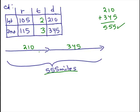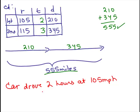So for the first part of the trip, you can see the time was 2 hours, second part was 3. So the car drove 2 hours at 105 miles per hour and 3 hours at 345 miles per hour. And there you go.